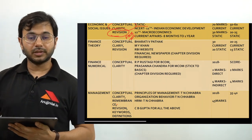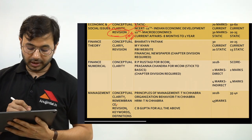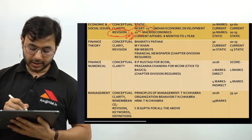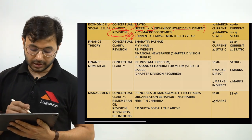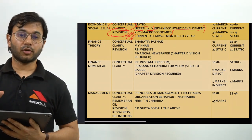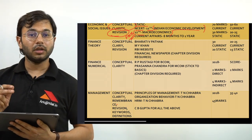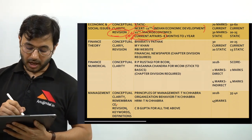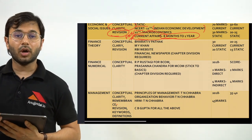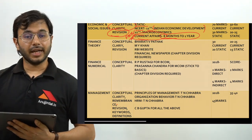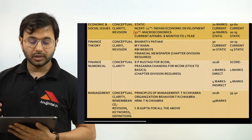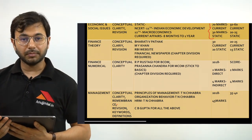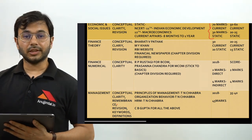For the static portion of ESI, there are two things to follow. First, the NCERTs of 11th and 12th — 11th NCERT is called 'Indian Economic Development', easily available online. For 12th, there are two books — macroeconomics and microeconomics — but you only need to cover macroeconomics. For current affairs, eight months to one year is more than enough for RBI or SEBI. Out of 100 marks, 70 marks come from current affairs and 30 marks from static.